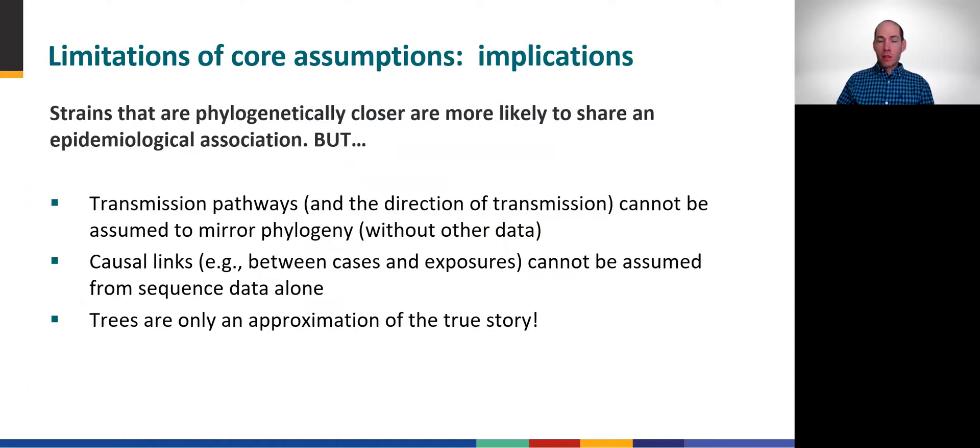Let's circle back to our core assumption that strains that are phylogenetically closer are more likely to share an epidemiological association. Certainly, there are caveats and limitations to bear in mind when making epidemiological inferences from phylogenetic trees. For example, it's important to remember that transmission pathways frequently cannot be determined from the tree. This is particularly salient for SARS-CoV-2, which has an approximate mutation rate of only about two SNPs per month. Causal links should not be concluded from sequence data alone and should always be interpreted in connection with traditional shoe leather epidemiologic data. If nothing else, simply remember that phylogenetic trees, though powerful, are only an approximation of the true story of transmission.